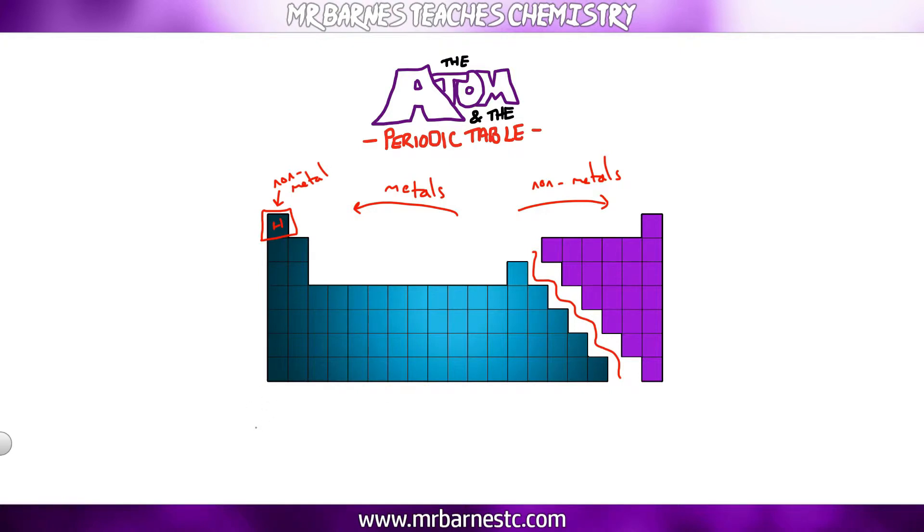You also need to know the names of the groups. So group one is your alkali metals, group seven is your halogens, and group zero at the end here is your noble gases. The rows going across are the periods which show you the number of shells. Remembering the group tells you the number of electrons in the outer shell.